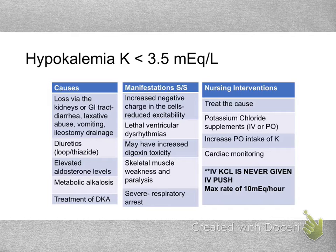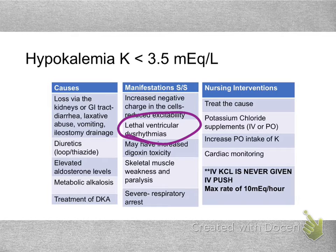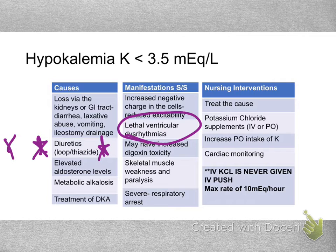Hypokalemia is also very dangerous because we can have those lethal ventricular dysrhythmias — V-tach and V-fib. Hypokalemia often happens from excessive loss, whether the person has severe diarrhea, vomiting, or certain medications. When we think about loop diuretics and thiazide diuretics, the patient should always be on a potassium chloride supplement — potassium and those diuretics should always be considered together.